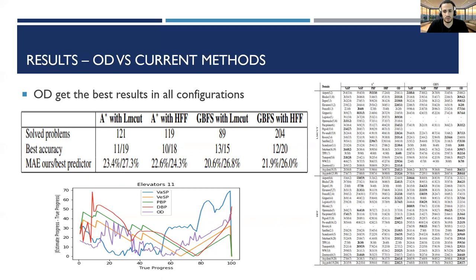The third row is the accuracy of OD compared to the second best model. The improvement is between 1.7 to 6.2 in absolute value. The right table shows the result on all configurations and domains. Left side is A-star, right side is GBFS, top side LMCAT, and bottom side is HFF.